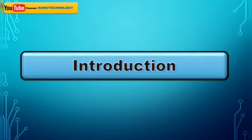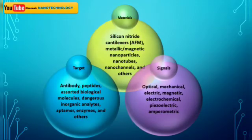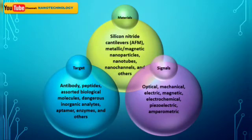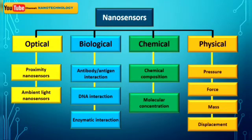Nanosensors have been developed for the detection of gases, chemical and biochemical variables as well as physical variables and the detection of electromagnetic radiation. This figure presents various types of nanosensors which are classified by: 1. their different detection targets, 2. their constituent materials, and 3. the signals they use to transmit information. There are generally 4 types of nanosensors including optical nanosensors, biological nanosensors, chemical nanosensors, and physical nanosensors, which have sub-categories as shown in this figure.